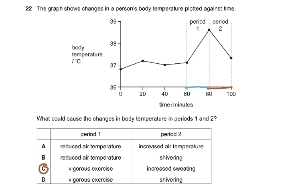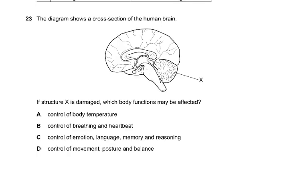If you've gone ice skating and fall into a pond of ice water, that would result in shivering. The diagram shows a cross section of the human brain. If structure X is damaged, which body function may be affected? You know there's a cerebellum, so the answer is D: control of movement, posture, and balance.